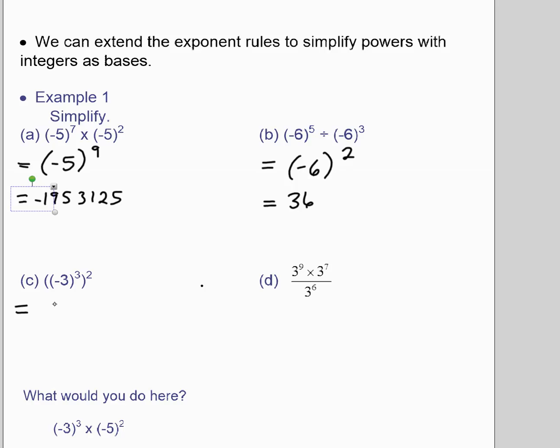Here, same thing. We're going to keep the base as it is, multiply the exponents, and then we evaluate it. Again, because the negative is repeated, the answer is going to be positive because it's a negative repeated 6 times, and that will give us a positive answer of 729.